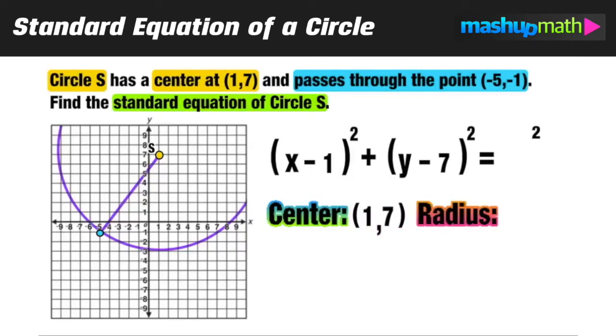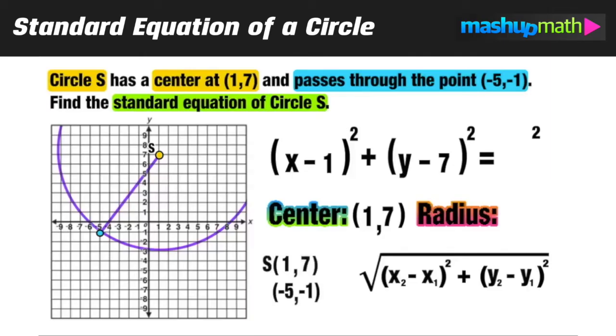To find the length of the radius I'm going to use the distance formula to find the length of the line that goes between those two given points. I'm going to write down the coordinates of those two points stacked on top of each other and then fill in the values for x2 and x1 and y2 and y1. We can continue to evaluate: negative 5 minus 1 equals negative 6 and on the right side in parentheses negative 1 minus 7 equals negative 8.